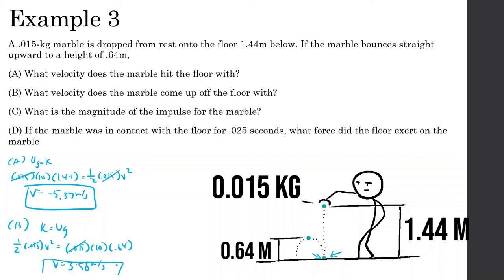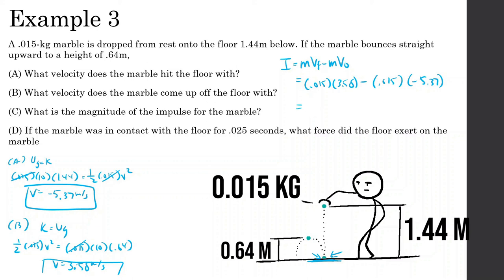Part C: what is the magnitude of the impulse? Impulse equals mass times velocity final minus mass times velocity initial. The marble comes up at 3.58 m/s and hit the floor at negative 5.37 m/s. So impulse = 0.015 × 3.58 − 0.015 × (−5.37) = 0.015 × 3.58 + 0.015 × 5.37, which gives approximately 0.13 kilogram·meters per second.